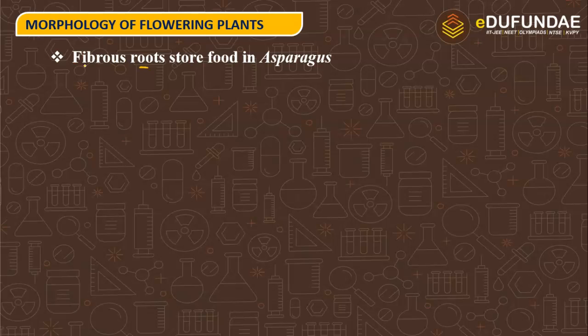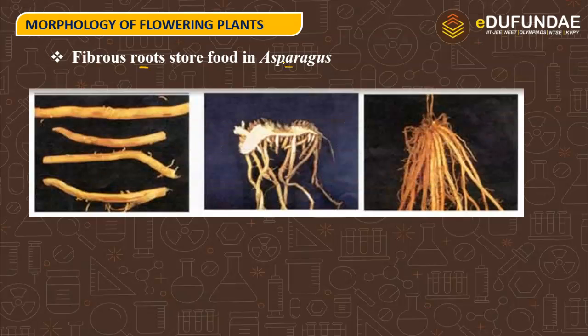Fibrous roots store food in asparagus. Fibrous roots are similar to adventitious roots, arising from parts other than the radicle. In asparagus, fibrous roots are modified to store food. These are the pictures of asparagus showing fibrous roots that have modified themselves to store food.